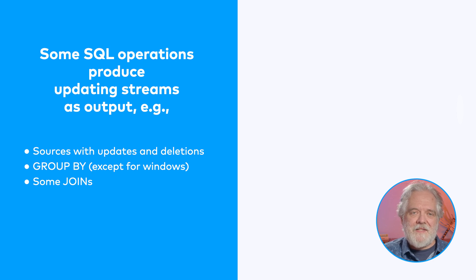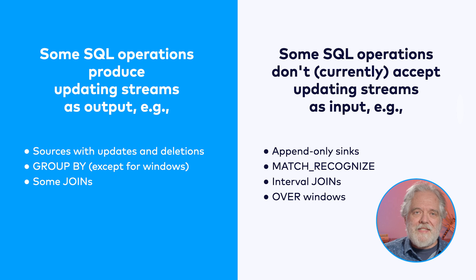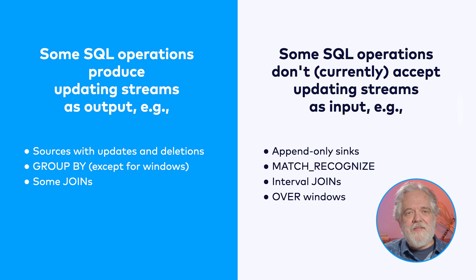Now we've reached the point where we have enough shared vocabulary that I can explain what's happening with the errors I showed at the beginning. The first half of the explanation is this: some SQL operators always produce updating streams — this is simply an inherent truth about these operators. This includes sources that include updates and deletions, such as a CDC stream in Debezium format coming from a relational database, and it also includes operations like grouped aggregations and some joins. For the second half: some SQL operations can't handle updates in their input. This means that the operations on the left cannot be composed with the operations on the right. For append-only sinks, it just makes sense that they can't accept updates, but for the rest of these operations, the limitation is simply a result of the current implementation. Like other successful open source projects, Apache Flink is gradually improving, and I expect that the community will extend at least some of these operators to handle changelogs that include updates.